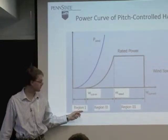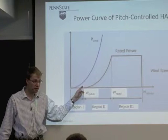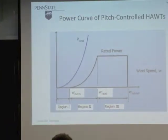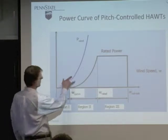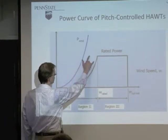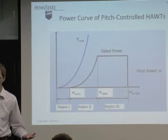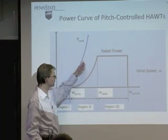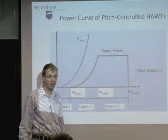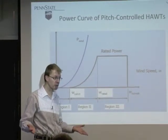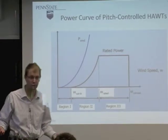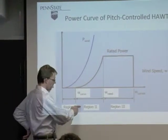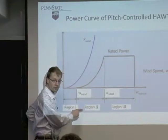Nothing's happening. Then, once the cut-in wind speed is reached, power ramps up, and you can see it's in an almost parallel slope to the power that becomes available with the wind speed itself. But it's only a certain fraction of that amount that a wind turbine rotor can actually capture — and we're going to learn about how much that is. That region is called Region 2.